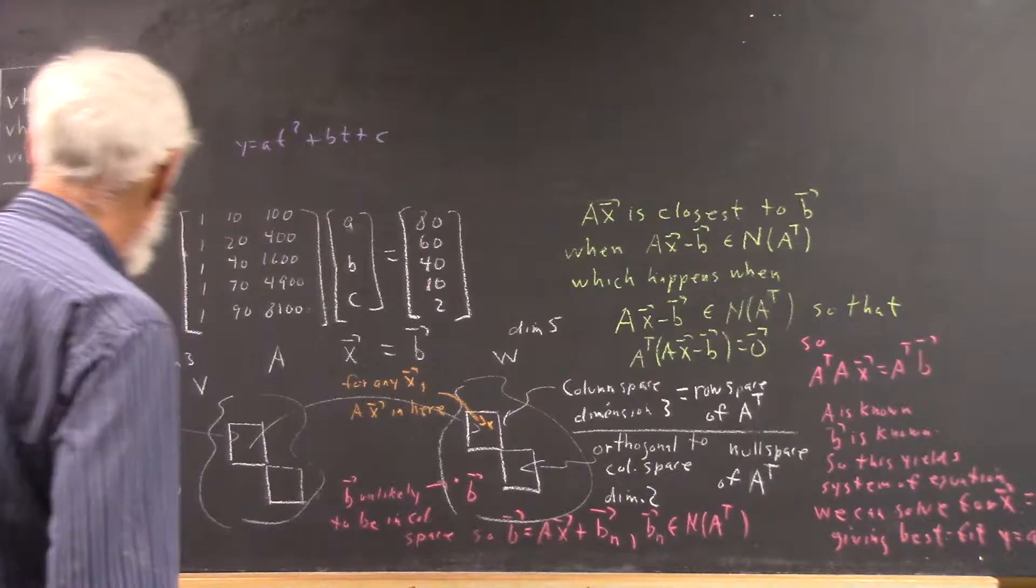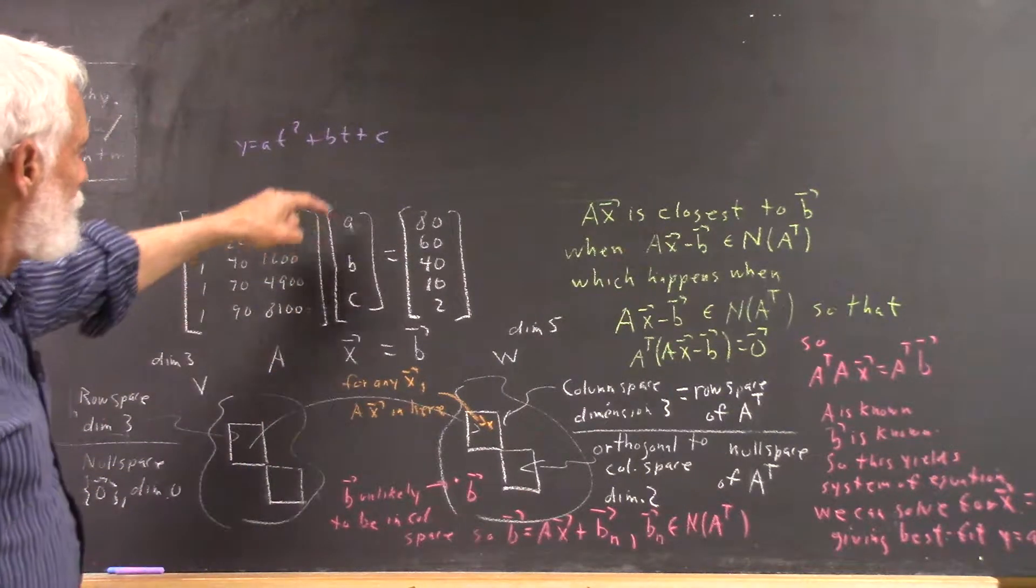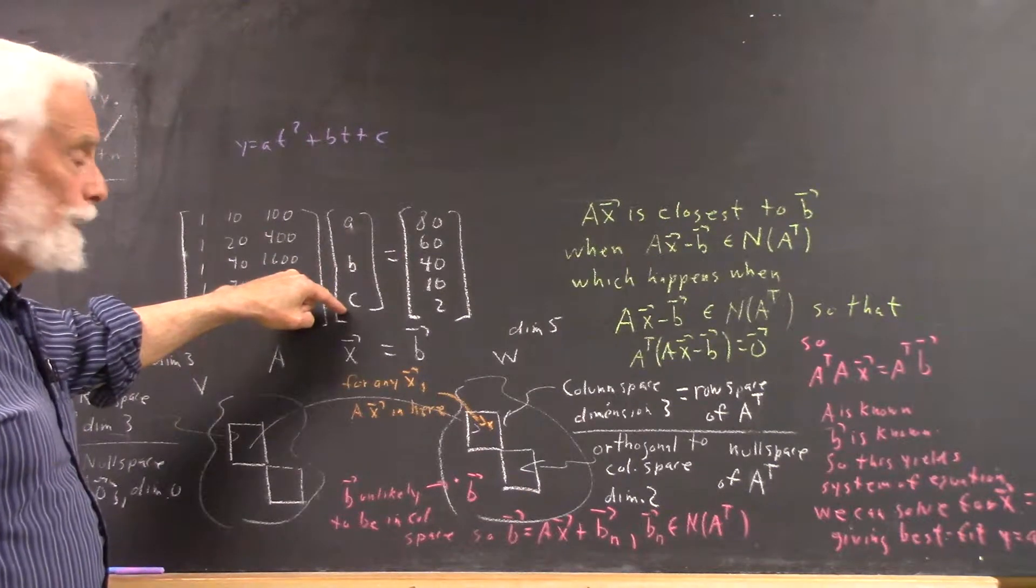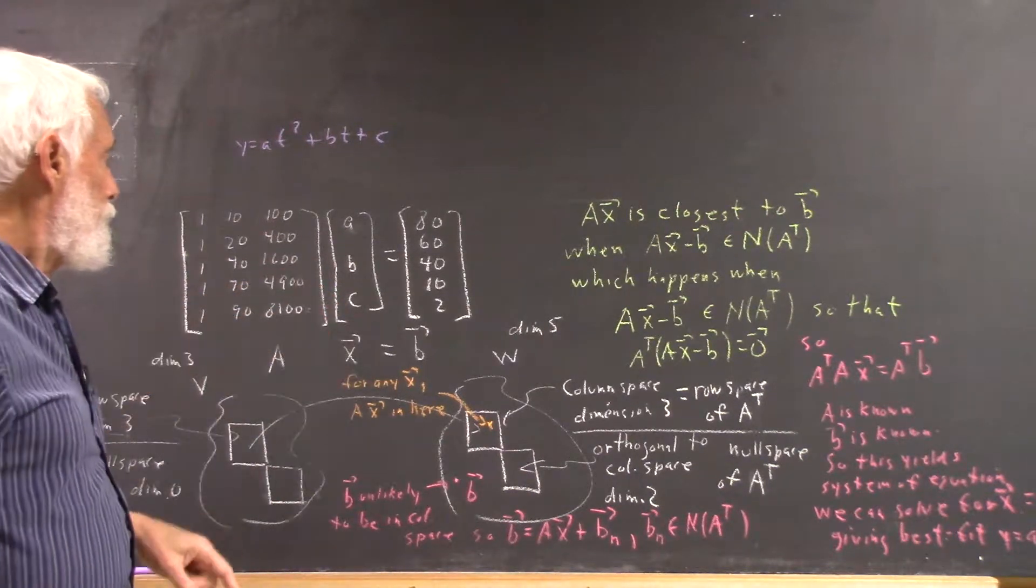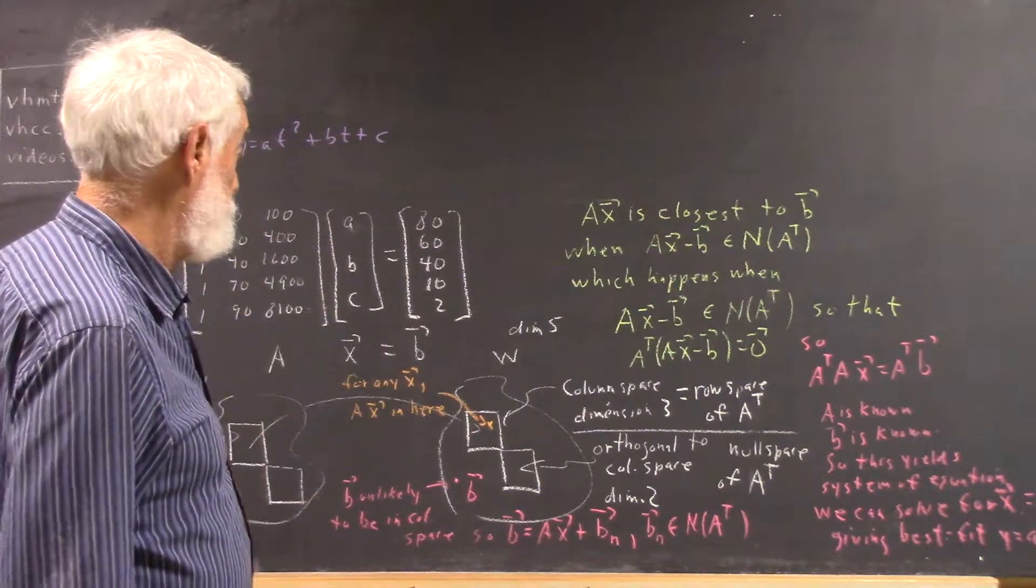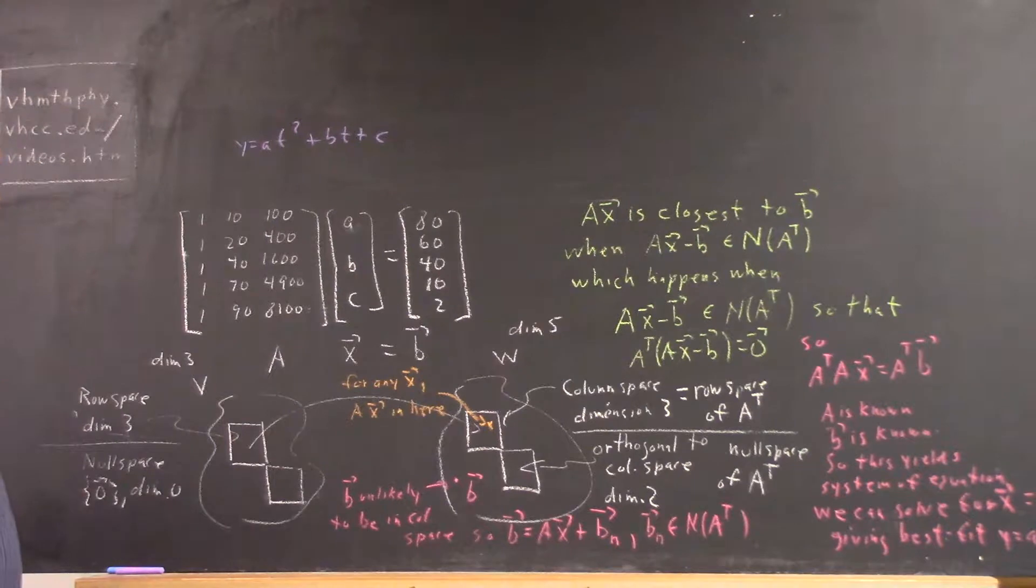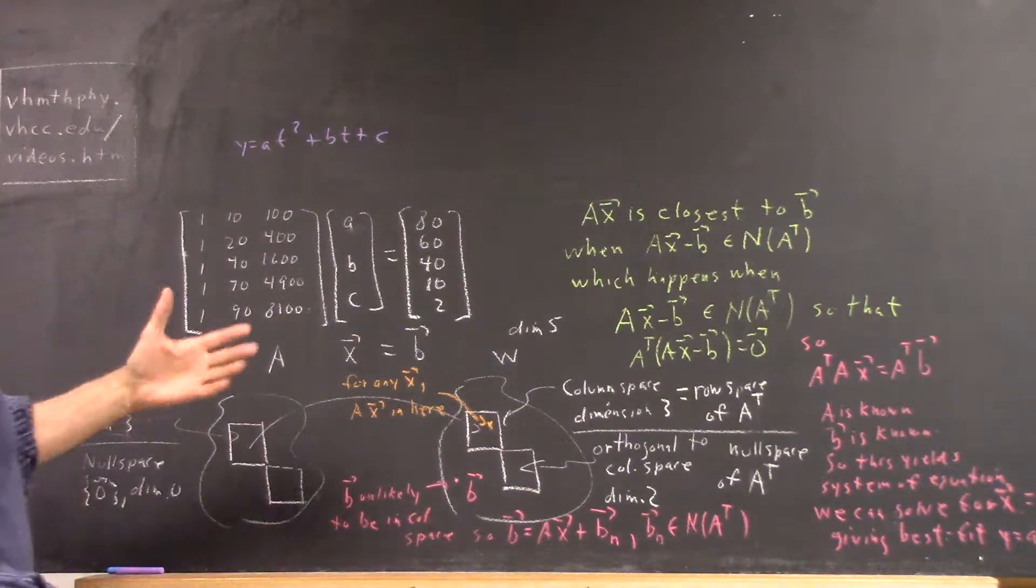What do we do then? What we want to do is we want to find the ABC values that will give us a solution that's as close as possible to this one. We want to find